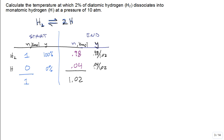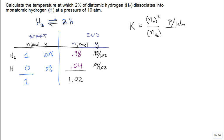Here's the dissociation equation. Just like many other equations in the textbook, it has an equilibrium constant K. Applying the general form, K equals the final amount of H squared divided by the final amount of H₂, times the pressure (10 atm) divided by the reference pressure (1 atm), divided by the total number of moles N, all raised to the power 2 minus 1.